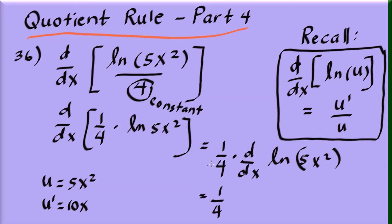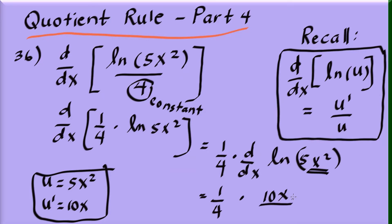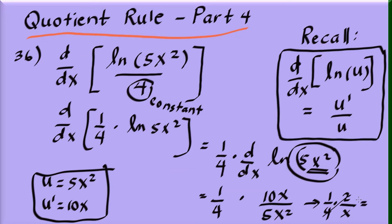Applying the formula for the derivative of natural log of u, we get u prime over u: that's 10x divided by 5x squared. Simplifying: 10 over 5 is 2, and x over x squared is 1 over x, giving us 2 over 4, which is one-half. So our final derivative is 1 over 2x.